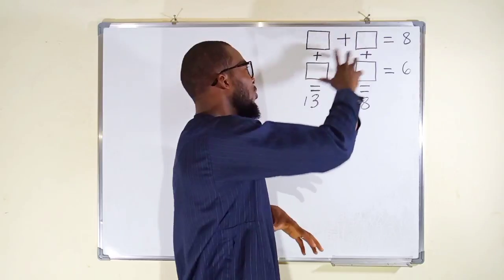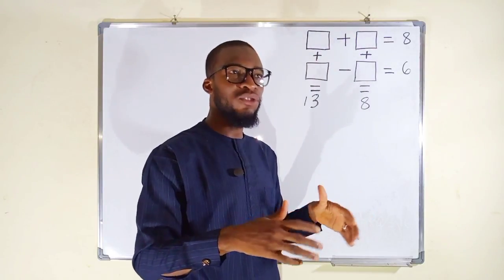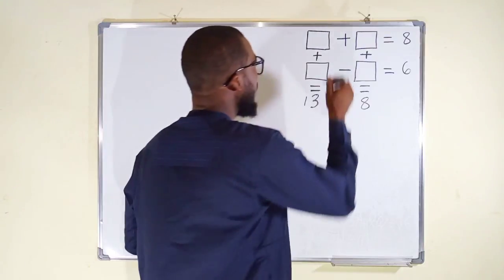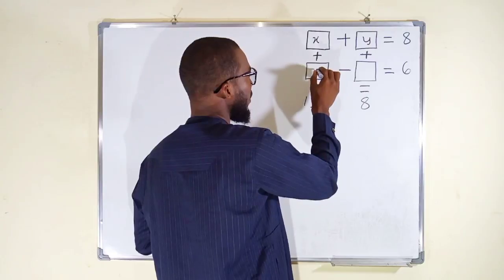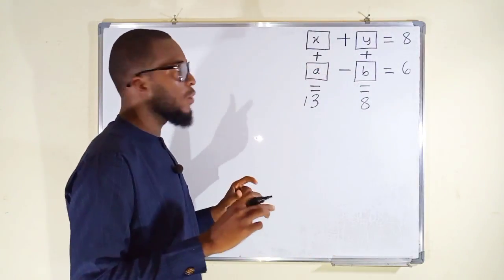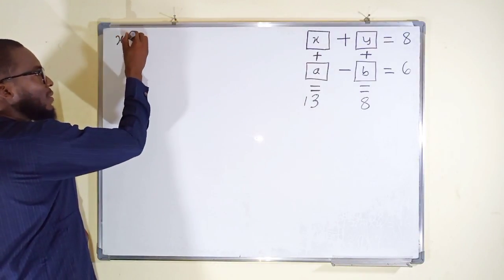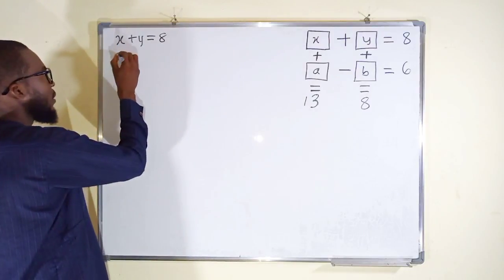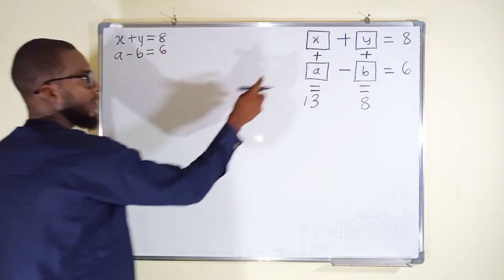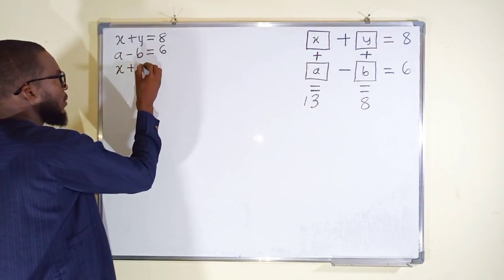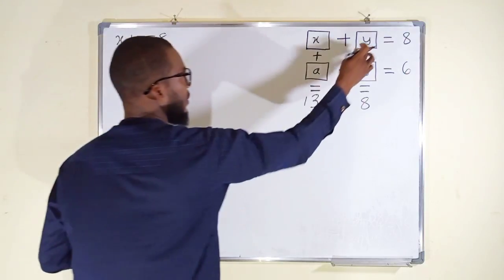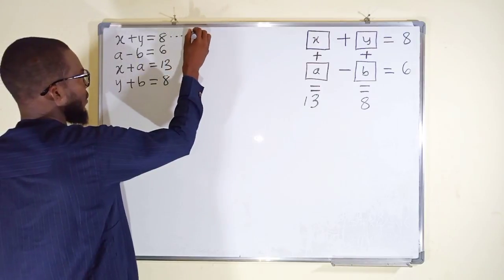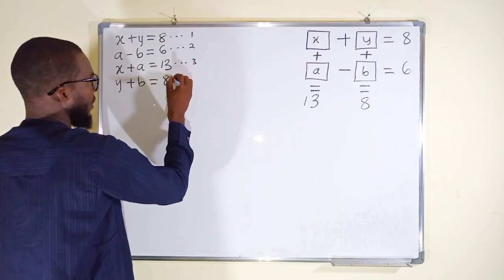The best way is to represent each of these boxes with some letters, unless you want to try trial and error. Let this box be x, this one y, this one a, and this one b. Let us form our system of equations. We have: x plus y equals 8, a minus b equals 6, x plus a equals 13, and lastly y plus b equals 8. These are equations 1, 2, 3, and 4.